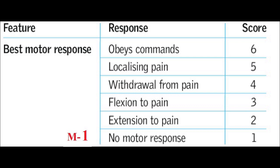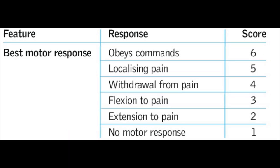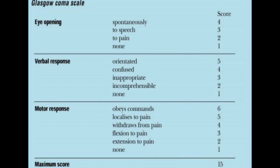To conclude motor response: M6 is obey commands, M5 localize to painful stimulus, M4 withdraw from pain, M3 flexion to pain stimulus, M2 extension to pain stimulus, and M1 is no response to pain stimulus. After checking all these parameters, we can calculate the total score to conclude about the level of consciousness of the patient. The total score is 15.